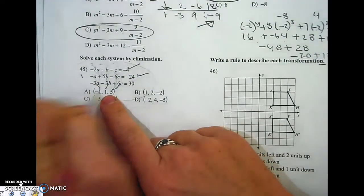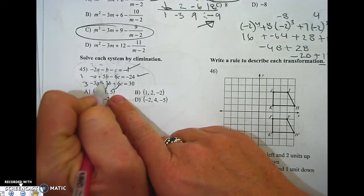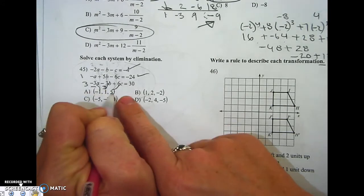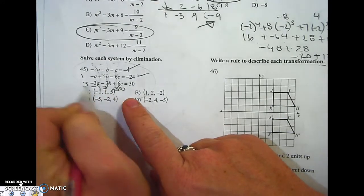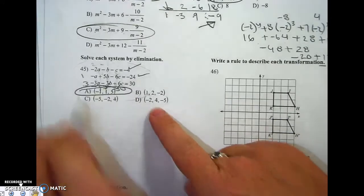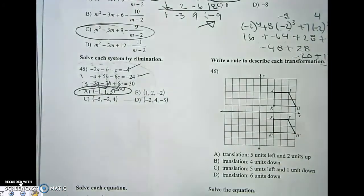Negative 3 times negative 1 is 3. 3 times 1 is 3, so I'm at 3 minus 3. 6 times 5 is 30. 3 minus 3 is 0, plus 30 is 30. Yes, the first one I tried worked.